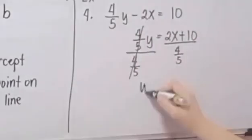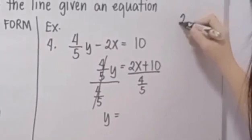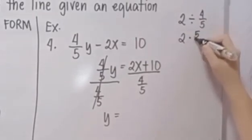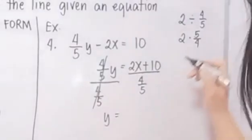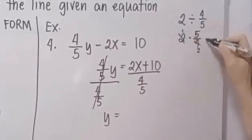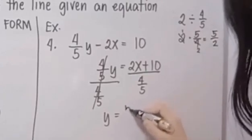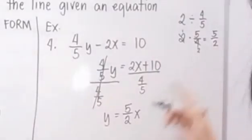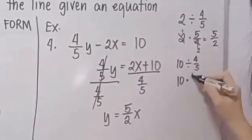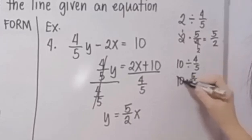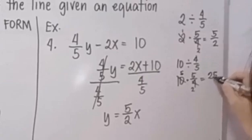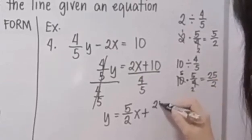We cancel the four-fifths on the left, so Y is equal to 2 divided by four-fifths. Dividing by a fraction means multiplying by its reciprocal, so this becomes 2 times five-fourths. We can cancel the 2 and 4, giving five-halves. So that term is five-halves X. For 10 divided by four-fifths: same procedure — 10 times five-fourths. Canceling 10 and 4 gives 5 and 2, so this is twenty-five halves.